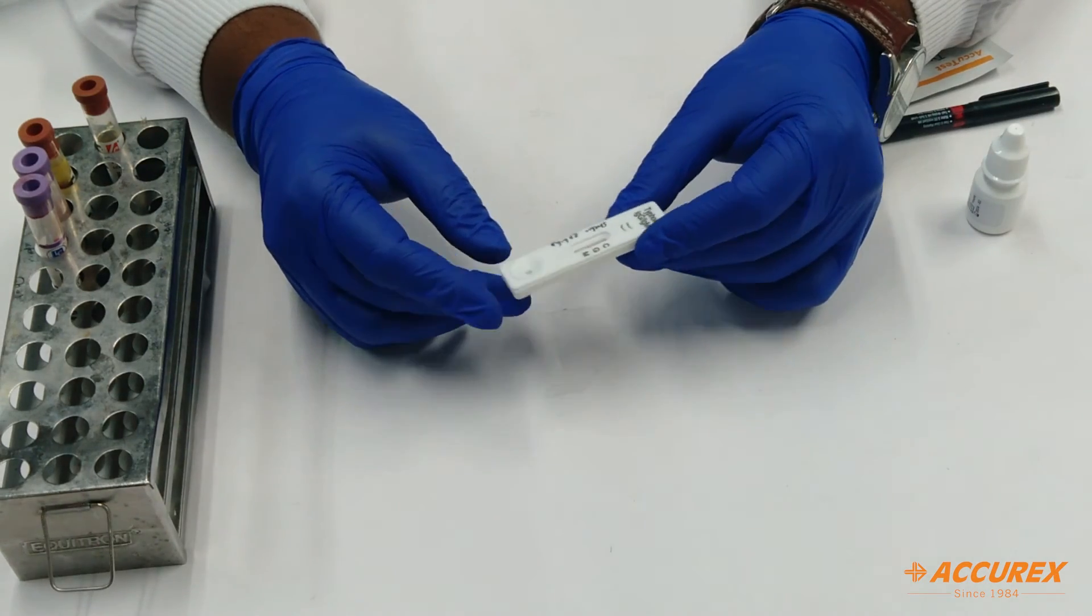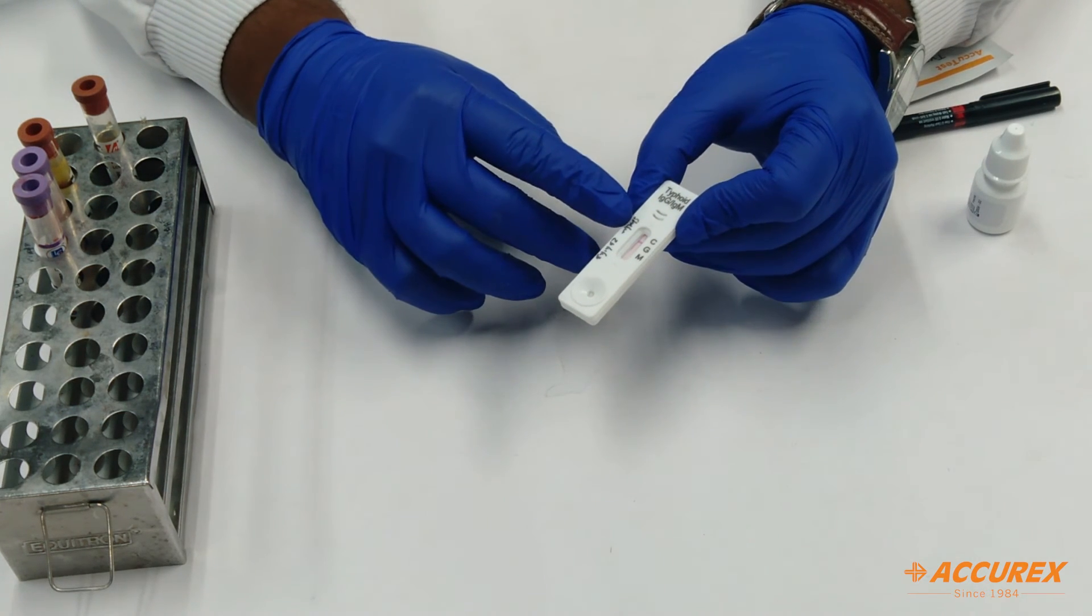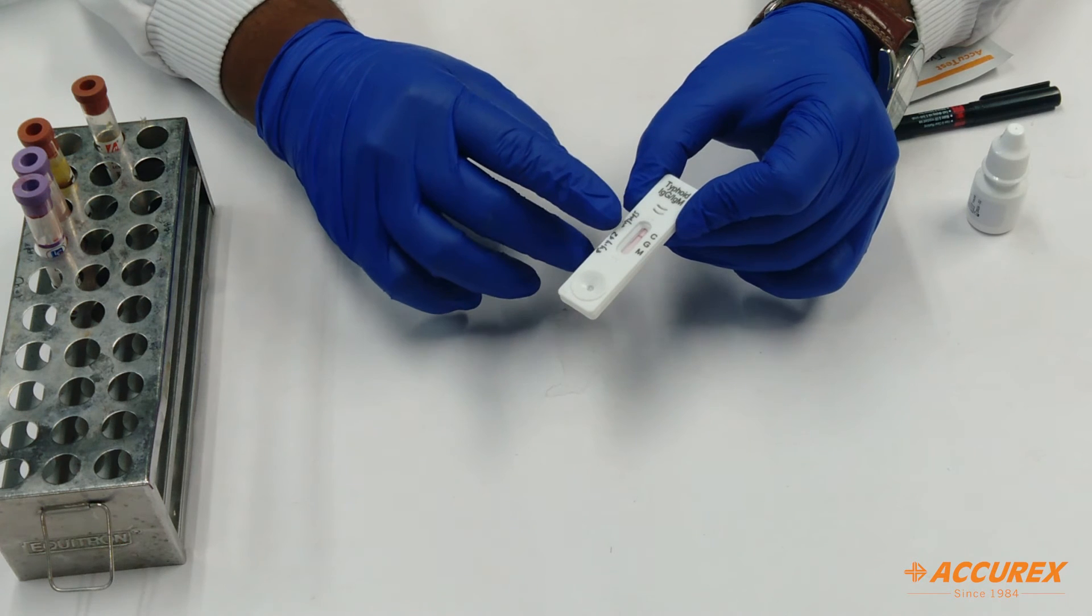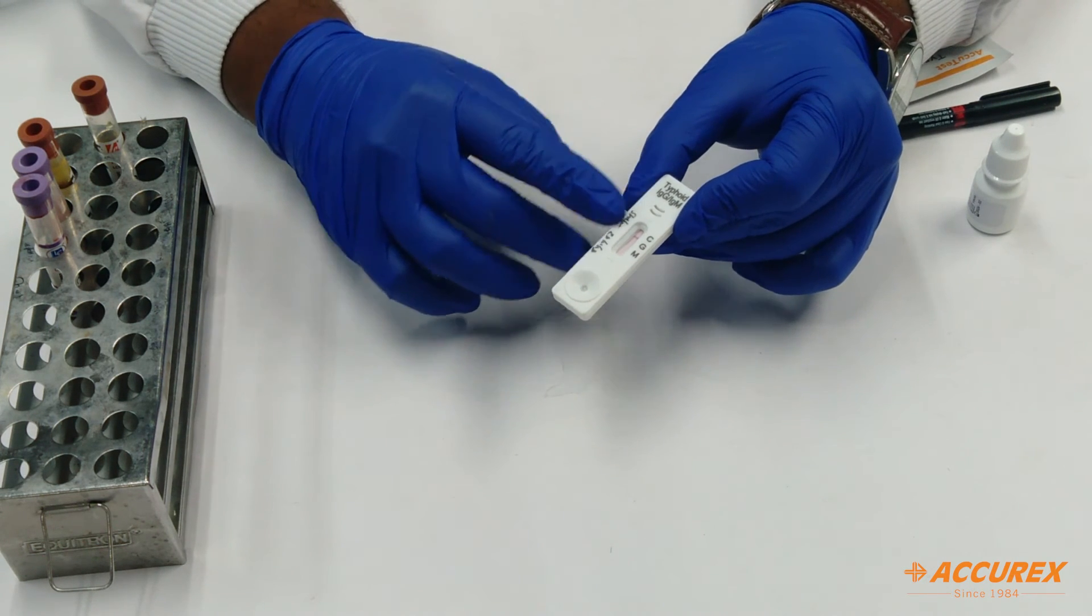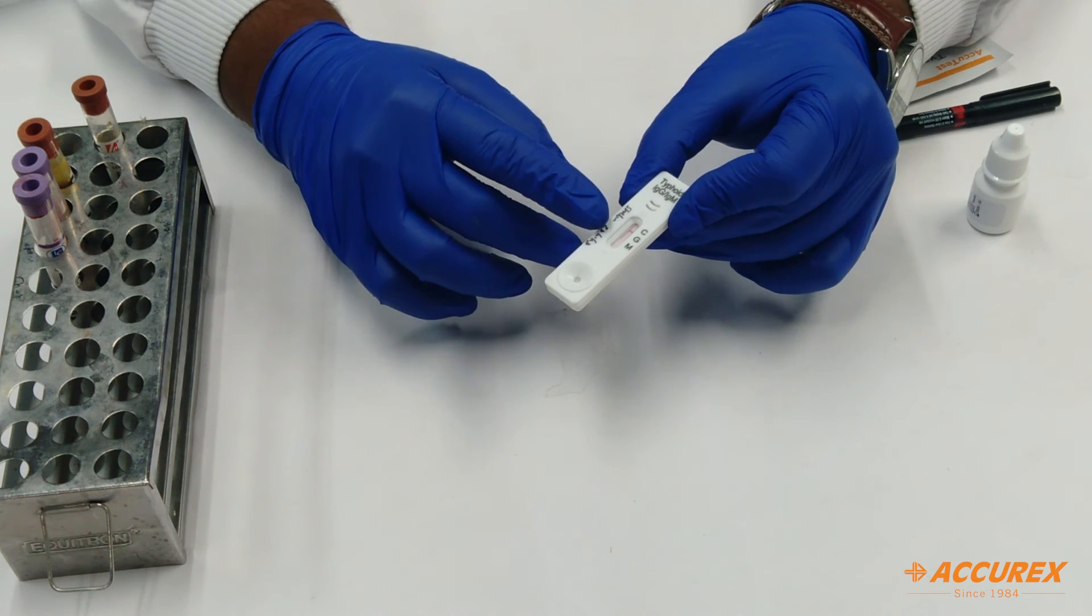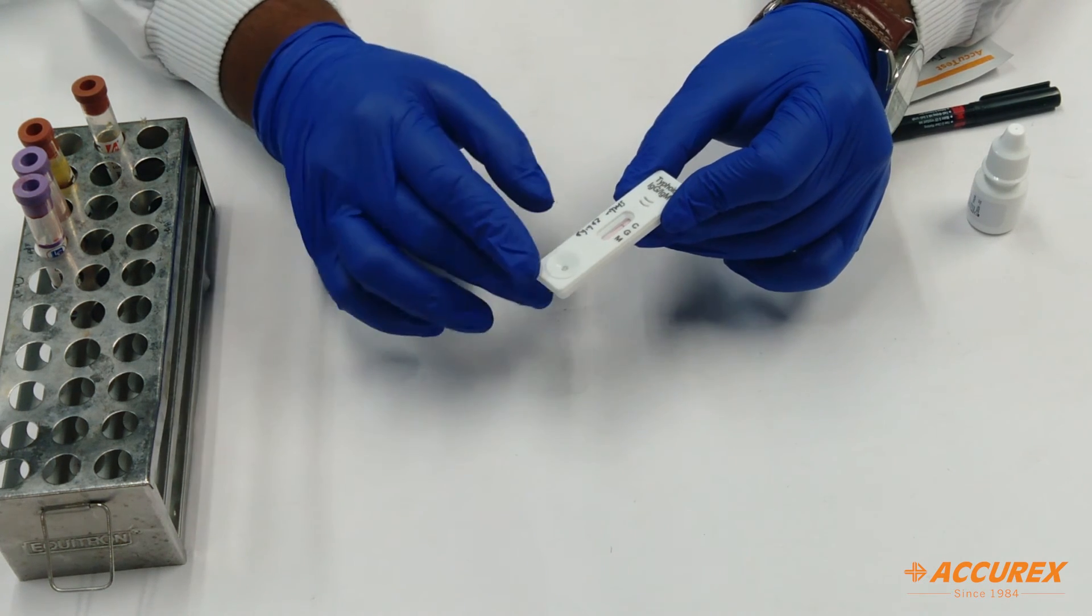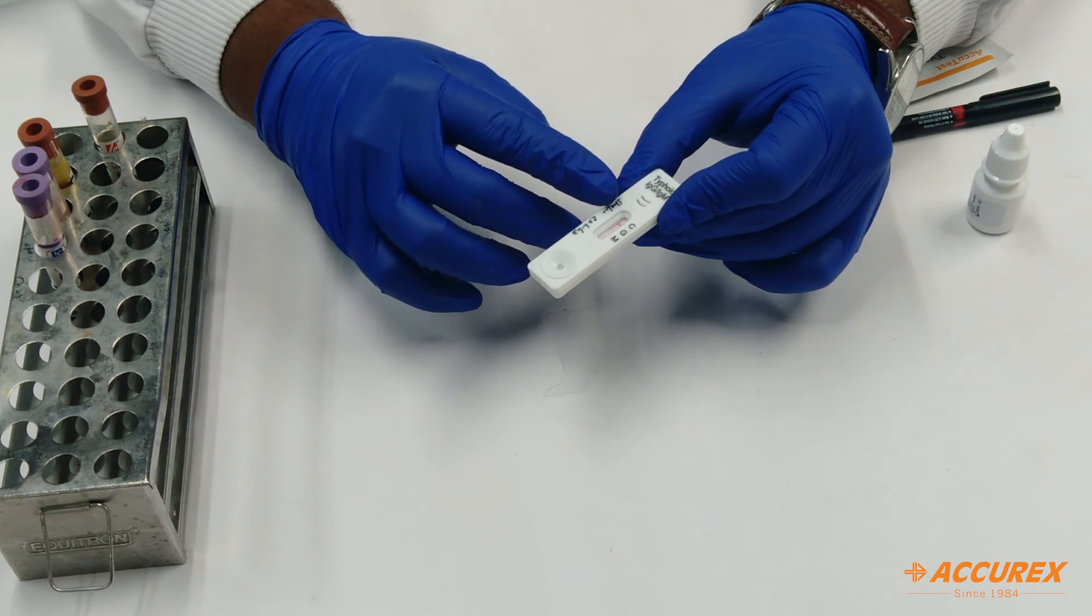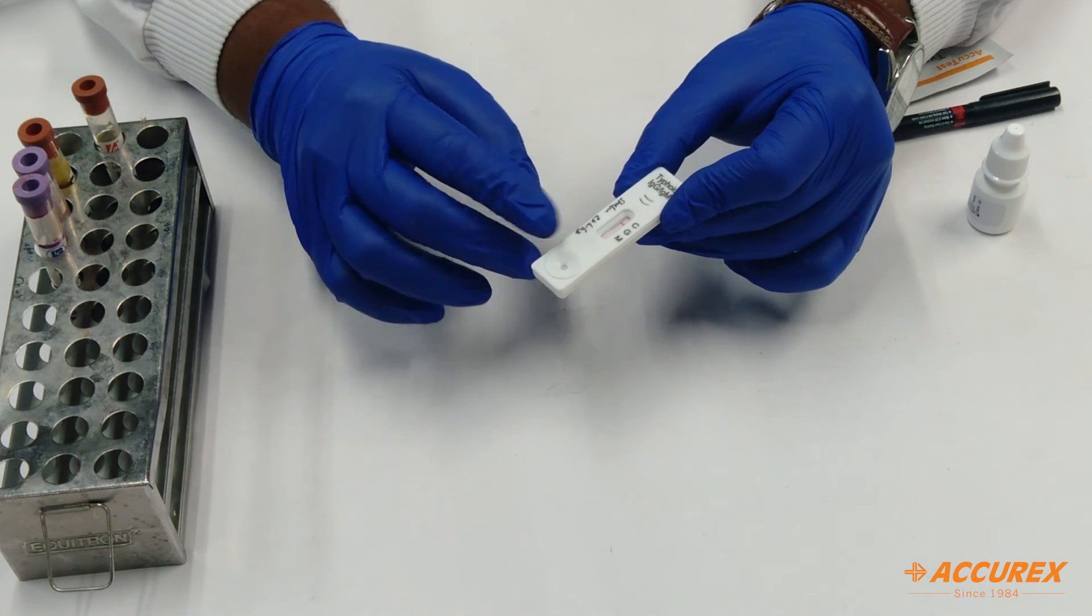Friends, you can see we have got the result in 15 minutes. The control line has been developed, but there is no line at IgG and IgM, which means the test is negative for IgG and IgM. If any line is developed between IgG and IgM, it is positive for that specific test. If there is no control line also, it means the card is faulty.